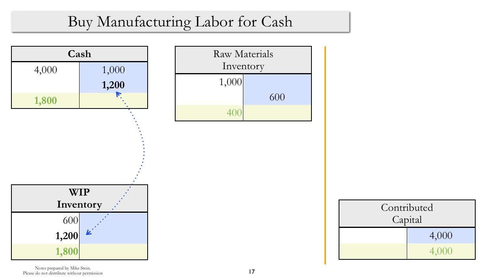Let's add some labor. We'll assume that the labor was paid in cash, so you see the debit to work-in-process inventory for $1,200 and the credit to cash for $1,200. You can see that the balance in the work-in-process account has now increased to $1,800.